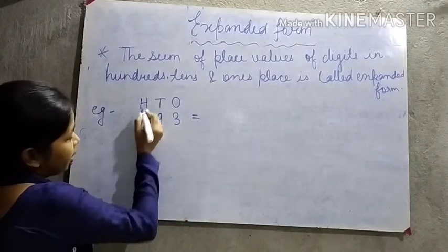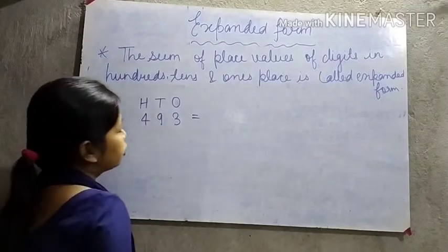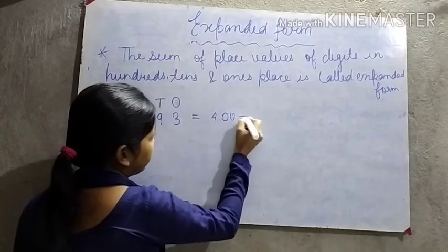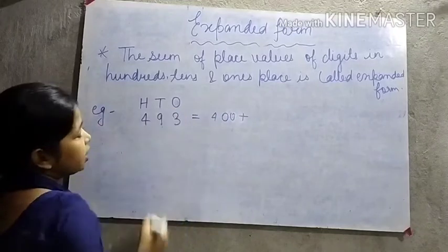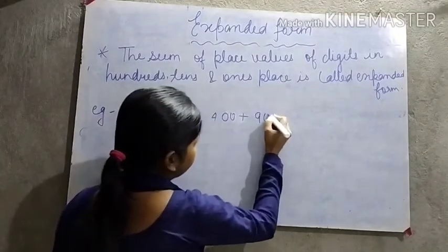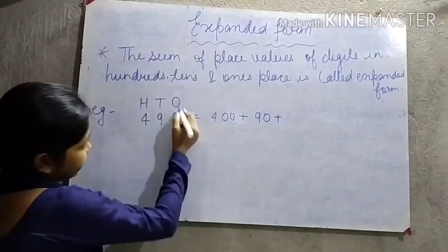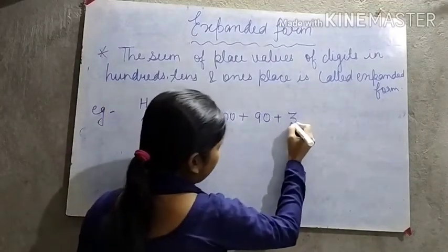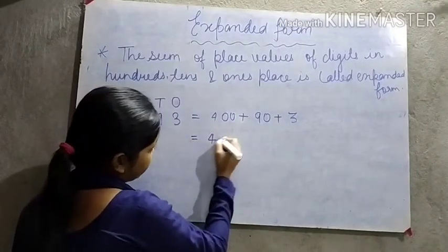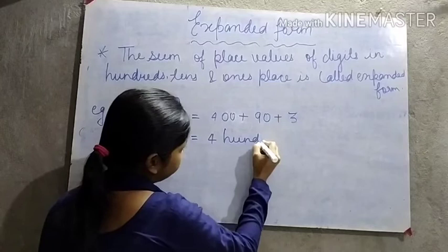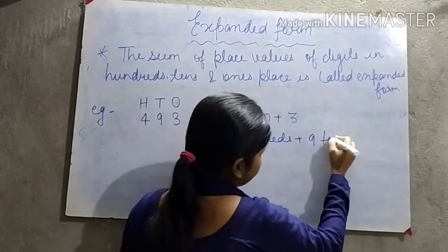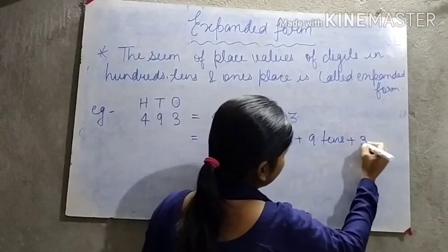Children, 4 is in the hundreds place, so the place value of 4 is 400. Plus, 9 is in the tens place, so the place value of 9 is 90. And 3 is in the ones place, so the place value of 3 is 3 only. In words, we will write: 4 hundreds plus 9 tens plus 3 ones.